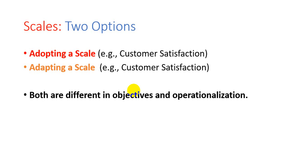For example, if you feel that adopting a scale — which essentially means using a published scale as it is — fully fulfills the objective of your research, you should be adopting a scale. Likewise, we have to look at the operationalization of that construct, which means looking at the items of that variable. If those items fully justify the concept of customer satisfaction we want to capture, we should be adopting the scale. On the other hand, if a published scale doesn't fulfill the objective of our research and the operationalization doesn't fit the type of customer satisfaction we want to measure in our context, then we have the option of adapting the scale.